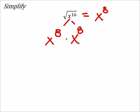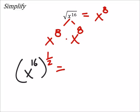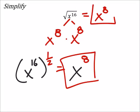Now remember, we could use the fraction on this too. So you have x to the power of 16 to the power of 1 half. So that's x to the power of — what's 16 times 1 half? 8. So both these are the same. That's pretty good.